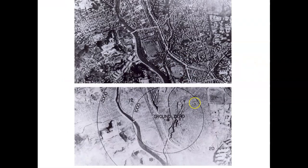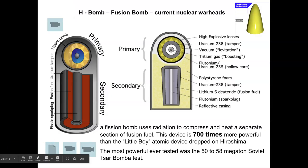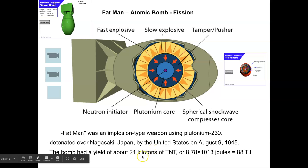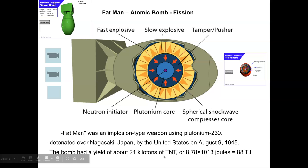Fat Man created tremendous destruction, though not as much as Hiroshima, for two reasons: it was dropped on a more industrial area with fewer people, and the hilly terrain absorbed some of the blast. However, it had a greater yield — 21 kilotons versus 15 kilotons for Little Boy. It still caused tremendous death and destruction, radiation sickness, and plenty of suffering.